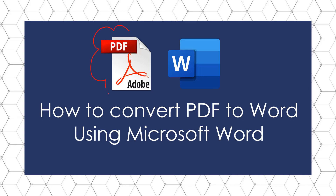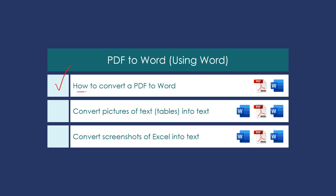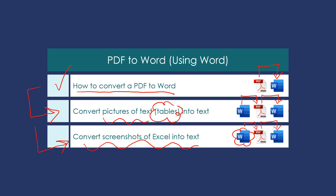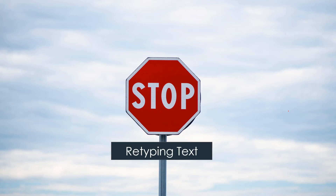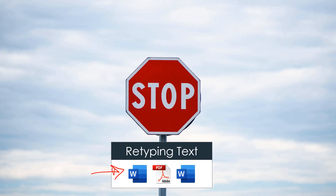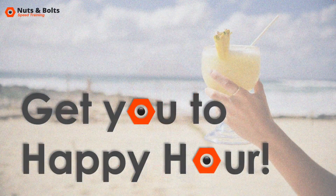This is Taylor from Nuts and Bolts Speed Training with a cool trick for how to convert a PDF into Word using nothing other than Microsoft Word. In this video I'll first show you how to do a straight conversion, then how to use a clever trick to convert pictures of text or tables back into text using a Word-to-PDF and PDF-back-to-Word trick, and then how to convert sloppy screenshots of Microsoft Excel back into text. All this is to help you stop retyping your text by using Microsoft Word to do the heavy lifting.